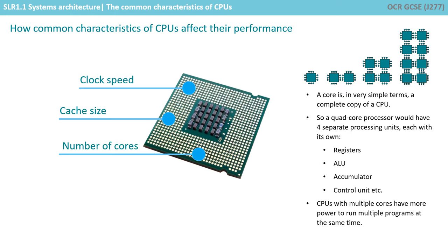Finally, we need to think about the number of cores. In very simple terms, a core is a complete copy of the CPU. So a quad core processor would have four separate processing units, each with its own set of registers, ALU, accumulators, control unit, etc. This means a CPU with more than one core is physically able to carry out more than one fetch-execute cycle at a time and has the potential to run multiple programs at once. Note, however, that doubling the number of cores doesn't directly lead to a doubling of the speed and efficiency of the processor.